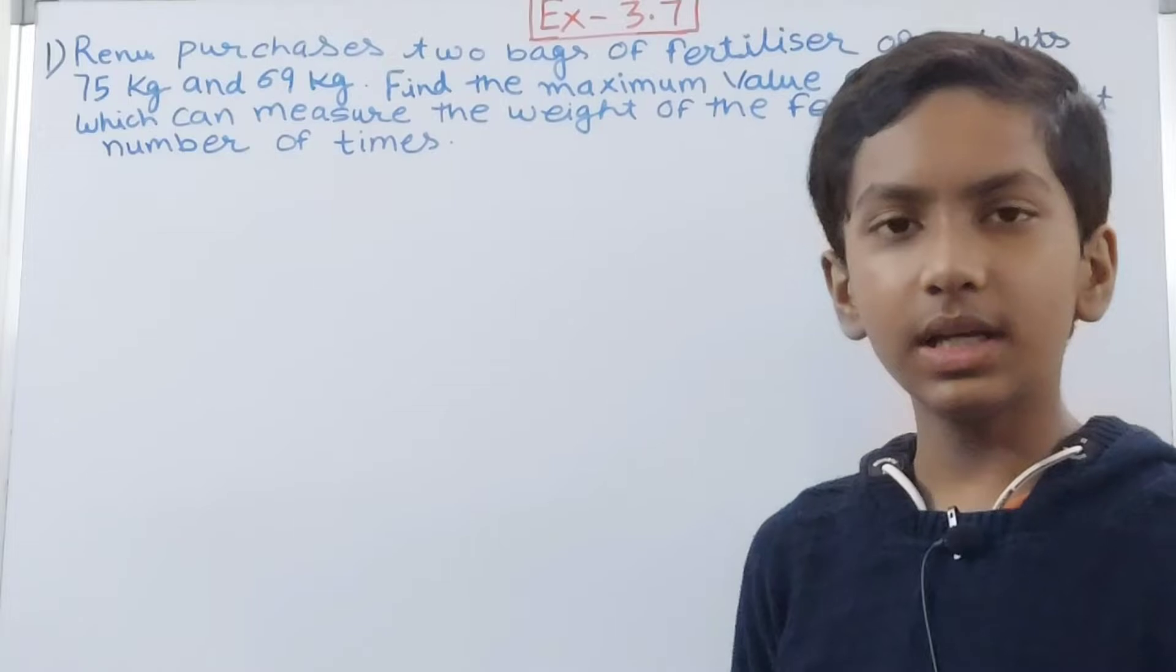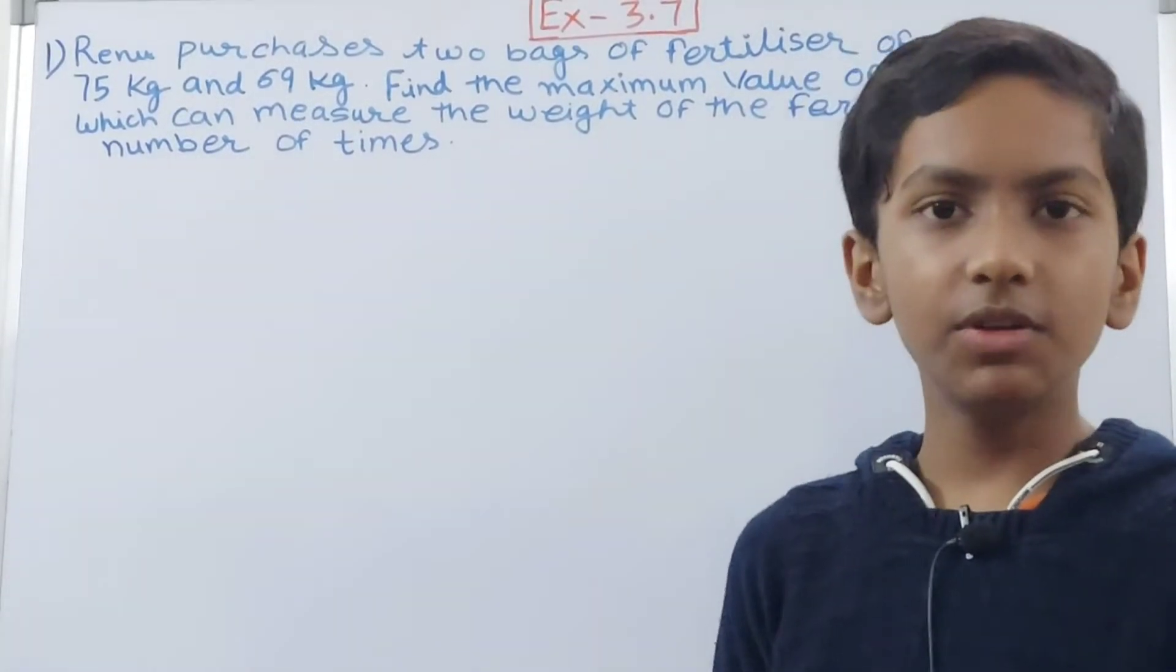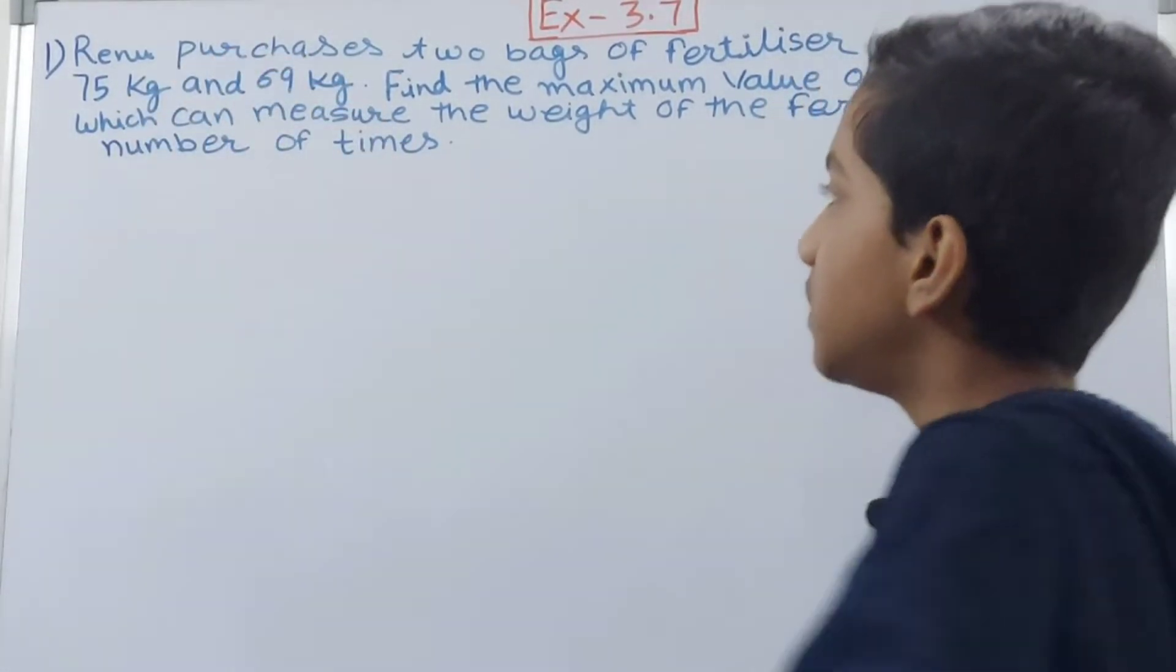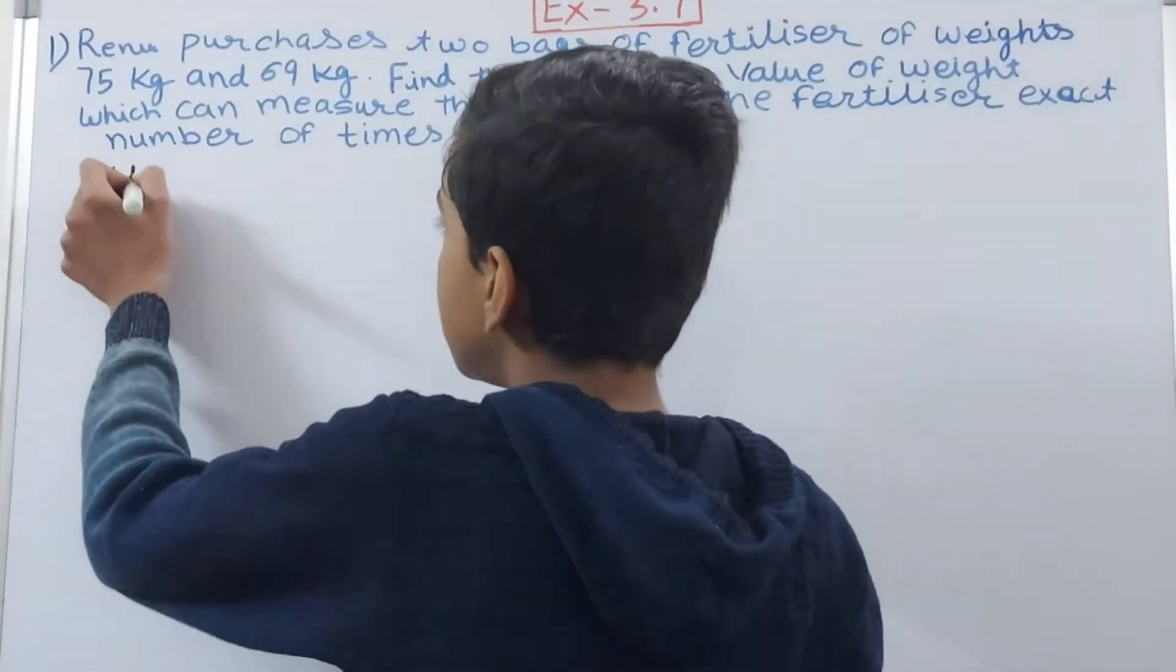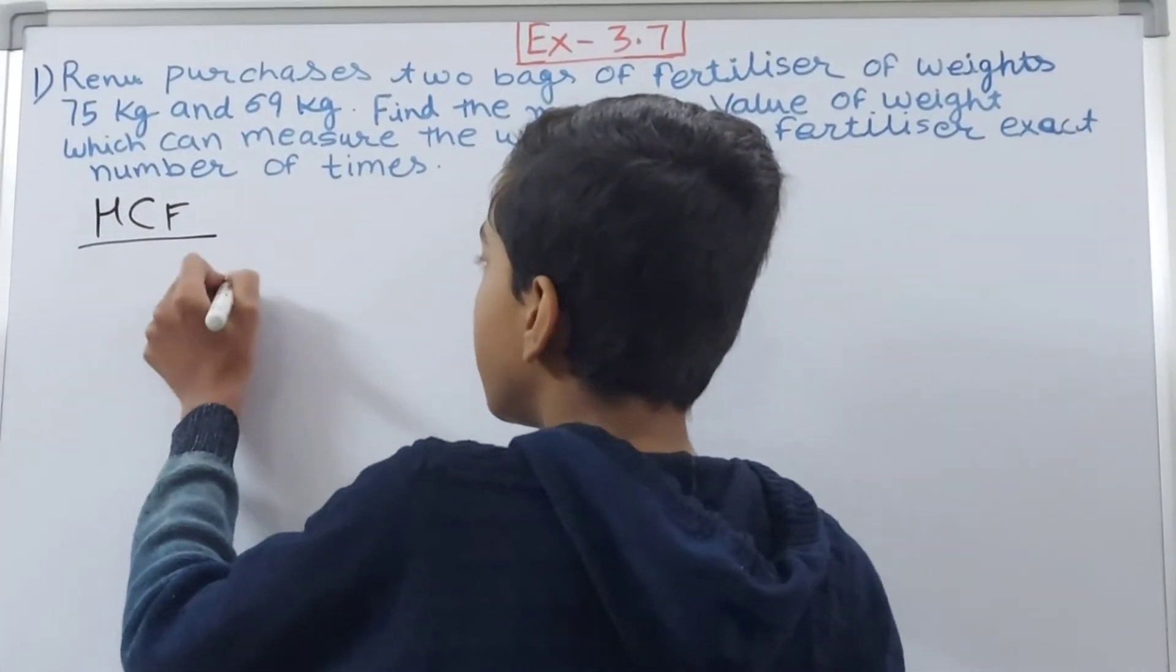You can see we have got maximum word here. That means maximum, you can relate that to highest as well, and highest common factor. So that means we need to find the HCF of 75 and 69.